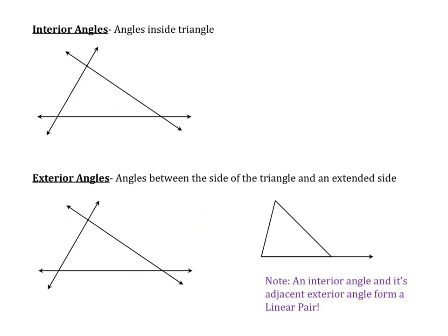Next, we are going to discuss the location of angles. Interior angles are angles inside the triangle — these three angles are my interior angles. Exterior angles are angles between the side of the triangle and the extended side. Most commonly, you'll see a picture where there's only one side extended, and that exterior angle sits between the side of the triangle and the extended side.